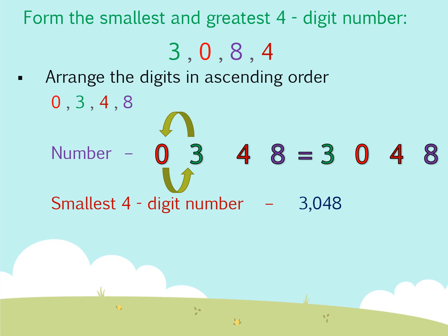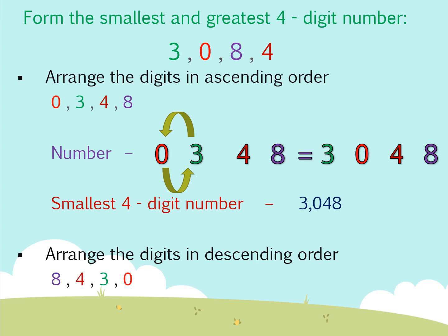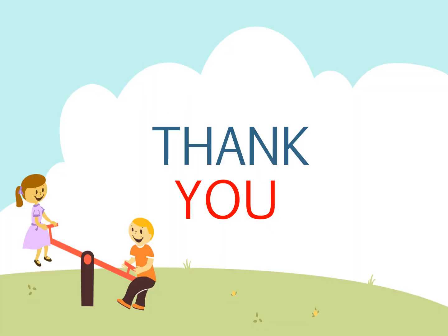Now to form the greatest number, we arrange these digits in descending order: 8, 4, 3, 0. Here 8 is greater than 4, 4 is greater than 3, and 3 is greater than 0. Thus we get the greatest 4-digit number as 8430. Thank you and have a nice day.